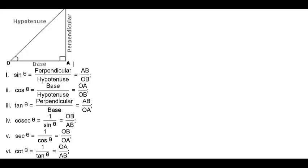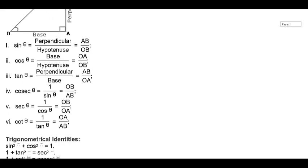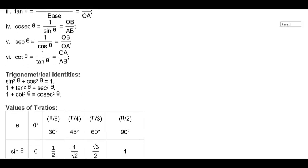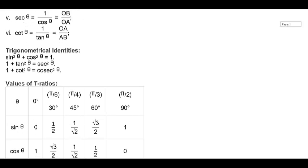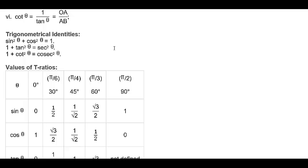This is very basic. These are the trigonometrical identities: sin²θ + cos²θ = 1; 1 + tan²θ = sec²θ; and 1 + cot²θ = cosec²θ.